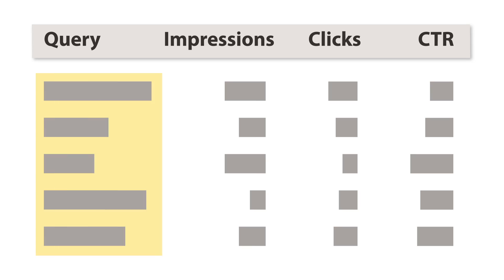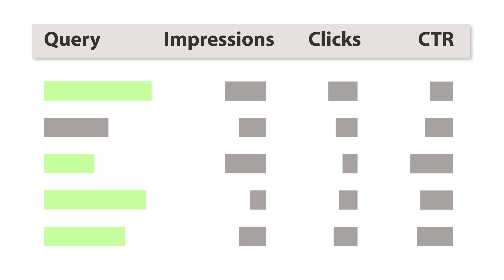It's also a good idea to review your site's query list. What are your users searching for when they come to your site? And how good of a job does your content do with giving them the information they're seeking? Also, check for any unexpected terms and look into where that content is coming from.